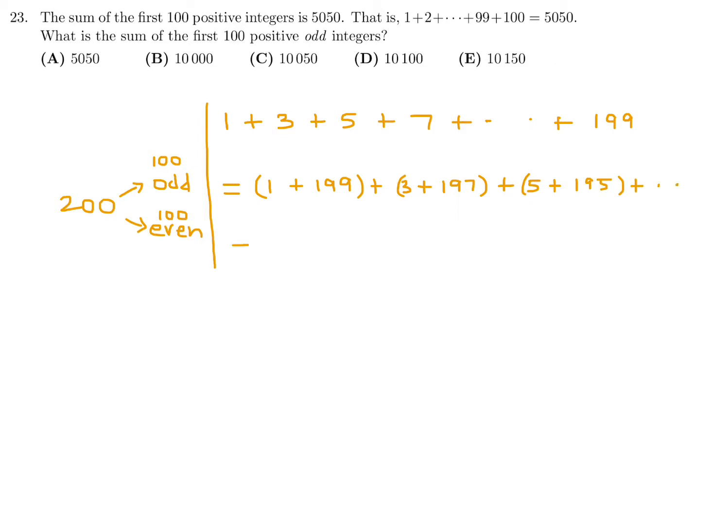And then you notice that each of these has a sum of 200. So that's it. All you have to do now is figure out how many of these pairs were there. Well, there was 100 numbers, and therefore 50 pairs. Correct? No trick.